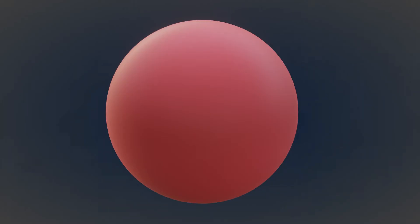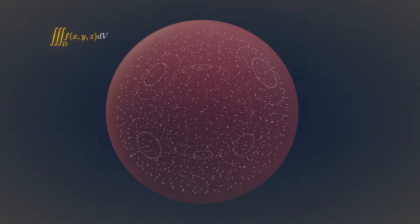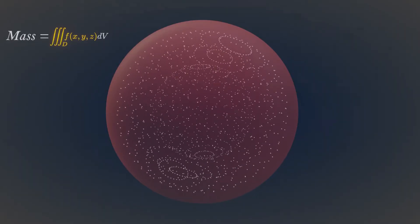You can think of triple integrals using the concept of mass and density. Let's say, density of this sphere varies throughout the volume. If density at each and every point is given by this scalar function, then the triple integral of this density function, over the entire volume of our sphere, gives the total mass of this sphere.